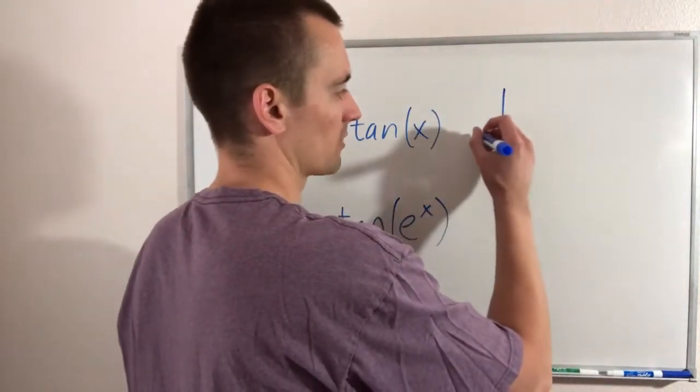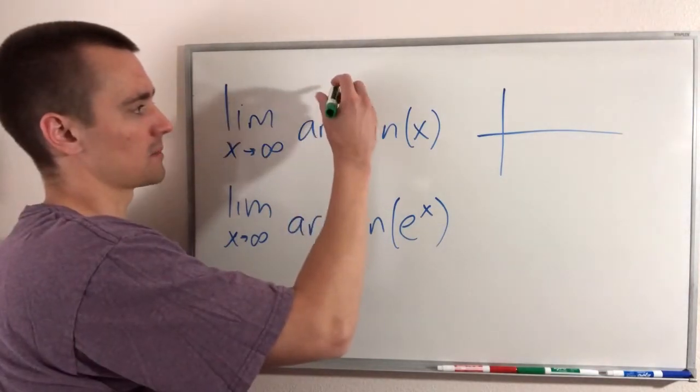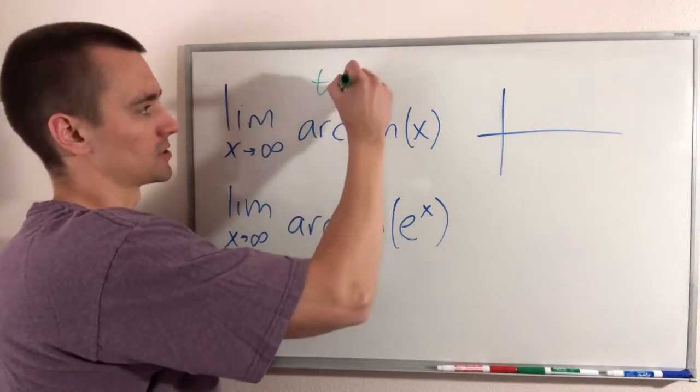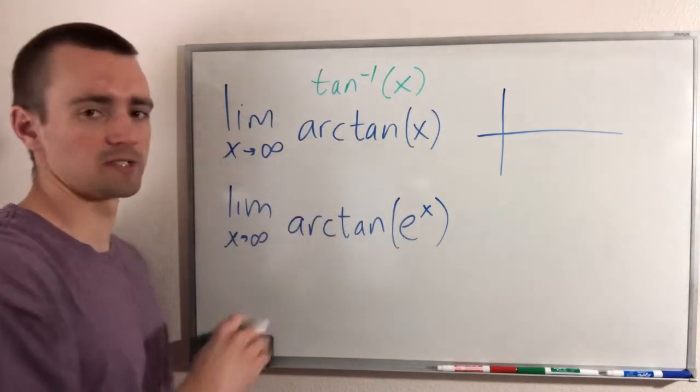If we imagine graphing arctan x, before we do that, I do want to point out arctan x is the same as inverse tangent. So this is just the inverse of tan x.